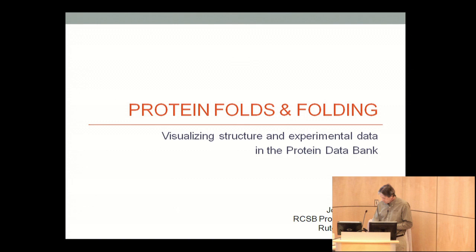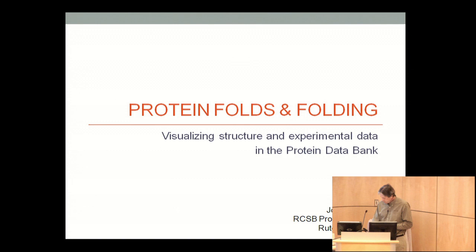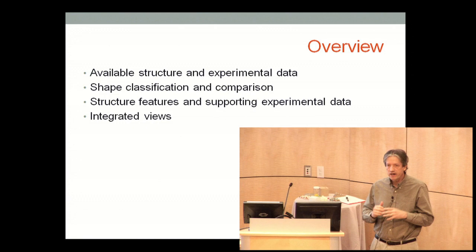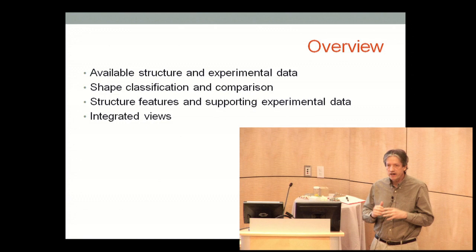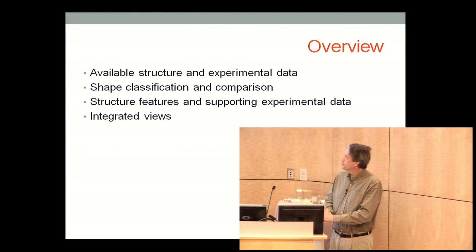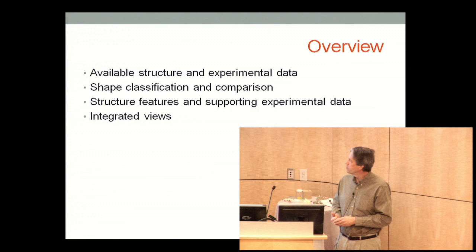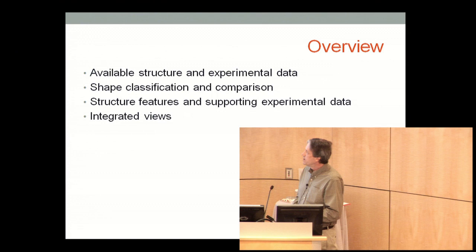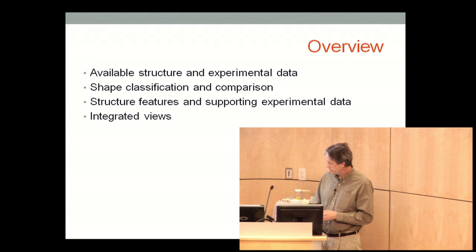Let me begin with an overview of what I'd like to talk about. I'd like to focus on what data is available within experimental structure space, both at the model level and at the experimental data level. I'll talk about shape classification schemes and comparison tools, some visualization tools to display features and supporting experimental data, and provide examples of integrated visualization views that tie structure to biology and to the general biological literature.